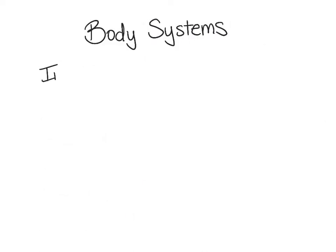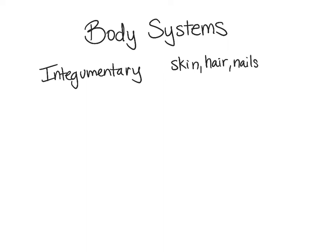The first one is the integumentary system. The integumentary system is really our skin mainly, our hair, our nails. This is our protective layer — it's the most superficial part of our body, and it's used for protection, trying to keep the inside of our body separate from our external environment so we can choose what we put into the body.